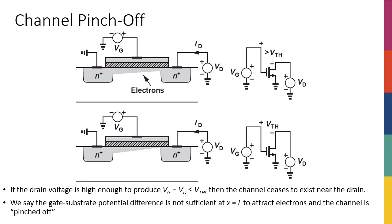As long as this voltage difference is greater than the threshold voltage, I still have free electrons. For example, if Vg is 2 volts, Vd is 1 volt, and the threshold voltage is 0.5 volts, then the gate-to-channel difference at the source is 2 volts and at the drain it is 1 volt. Both of these are greater than 0.5, so everywhere between source and drain the difference is between 1 and 2 volts — I have free electrons throughout the entire channel.